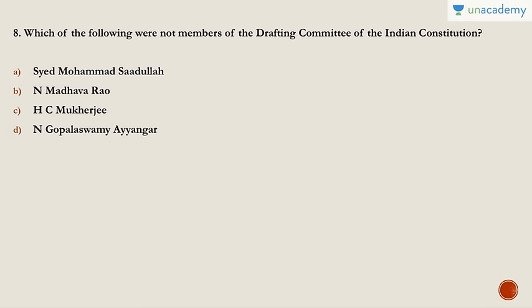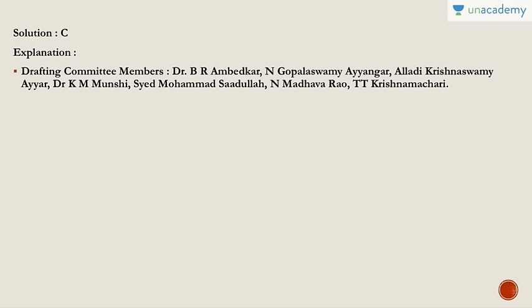The answer is H.C. Mookerjee, because he is not a member of the Drafting Committee — the other three options are members. The seven members are: Dr. B.R. Ambedkar, Gopalaswami Iyengar, Alladi Krishnaswami Iyer, Dr. K.M. Munshi, Sayyad Muhammad Sadulla, Madhav Rao, and T. Krishnamachari. The answer is C.